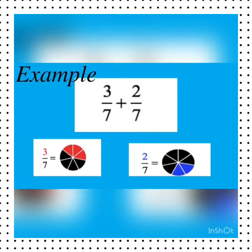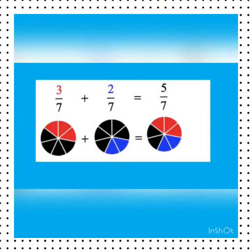Let's understand with the help of some examples. Here we have two fractions, 3 by 7 and 2 by 7. Now divide the circle according to the given fraction and shade according to the given statement.